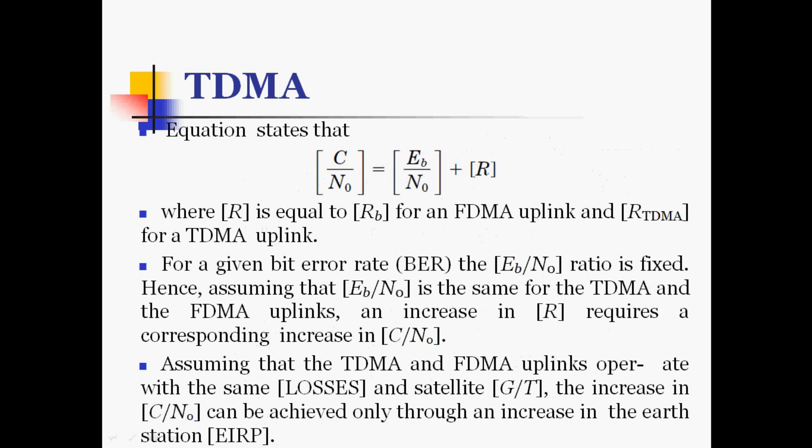The carrier-to-noise ratio equation gives EB/N0 plus R, where R equals bit rate RB for FDMA uplink and RTDMA for TDMA uplink. For a given bit error rate (BER), the EB/N0 ratio is fixed. Assuming EB/N0 is the same for both TDMA and FDMA uplinks, an increase in R requires a corresponding increase in carrier-to-noise ratio. Assuming the same losses and G/T ratios for both, this increase can only be achieved through an increase in earth station EIRP.